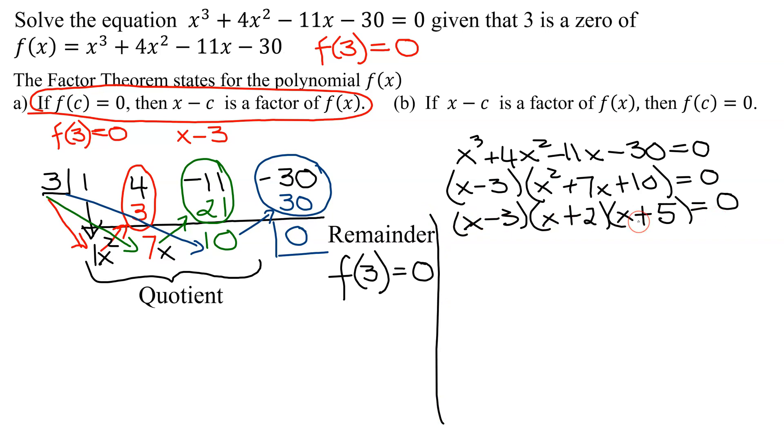So now I've written my polynomial in factored form. Three factors multiplied together equals 0. Set each of them equal to 0. So I have x - 3 = 0. Add 3 to both sides, you get x = positive 3.